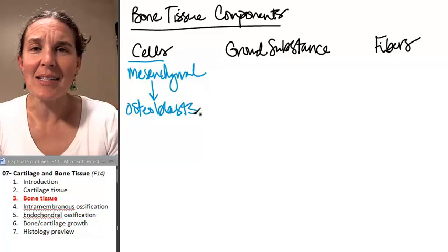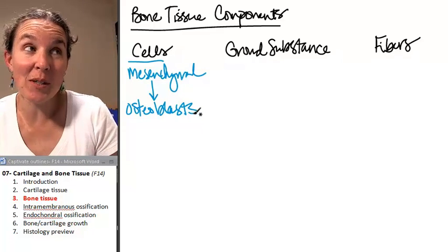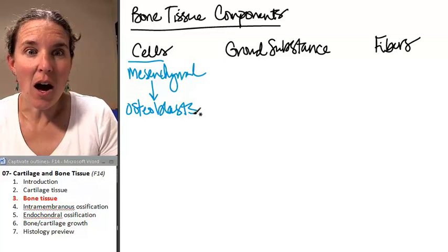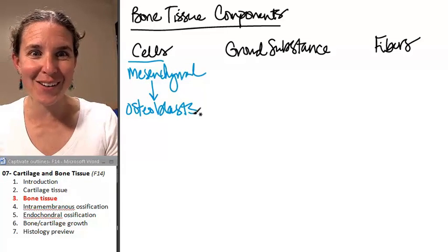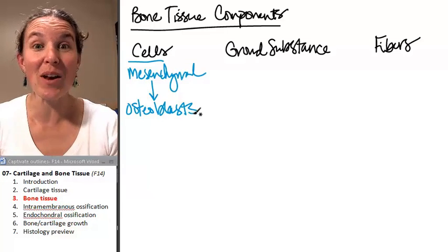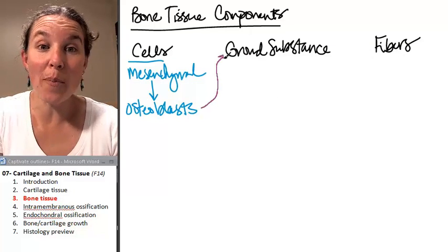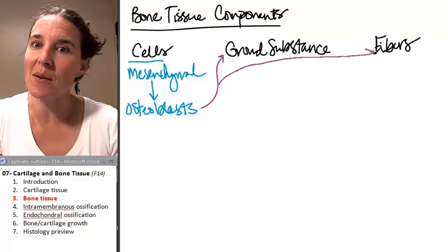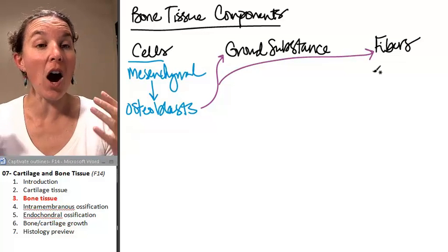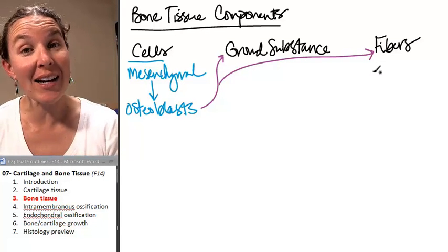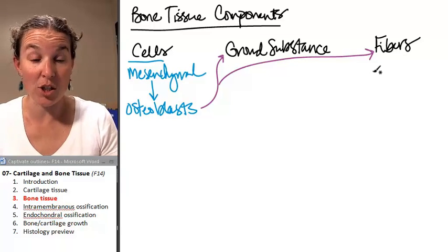Osteoblasts. And go ahead, take a wild guess. Chondroblasts built cartilage. Osteoblasts, what do they do? They build bone. They are the ones who are producing the ground substance and fibers. When osteoblasts are active, they're going to be building bone tissue.